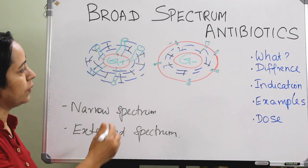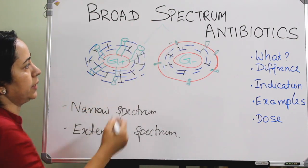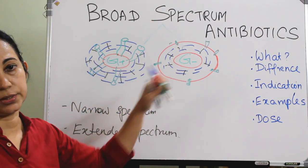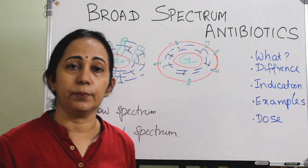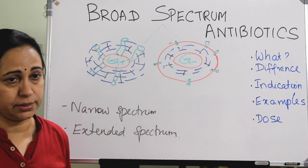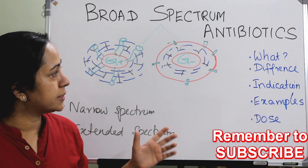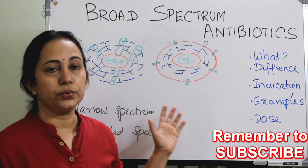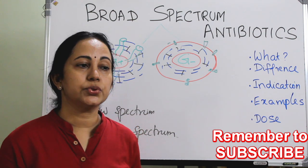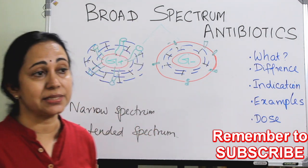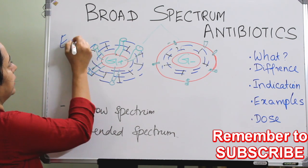That is why broad spectrum antibiotics are active against both gram positive and gram negative organisms. Now let us see the indications for use of broad spectrum antibiotics. Usually we give broad spectrum antibiotics as empirical therapy, and narrow spectrum is usually given for definitive therapy.